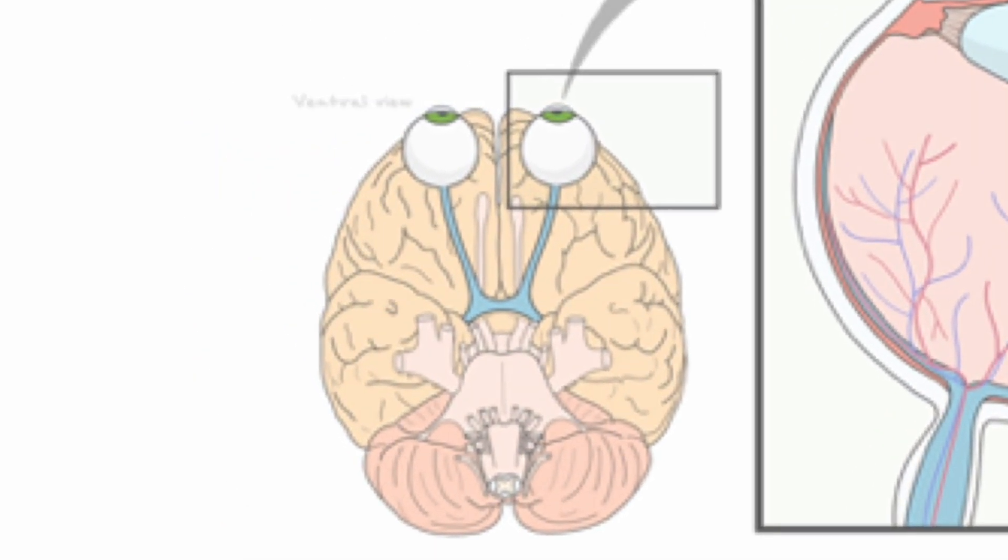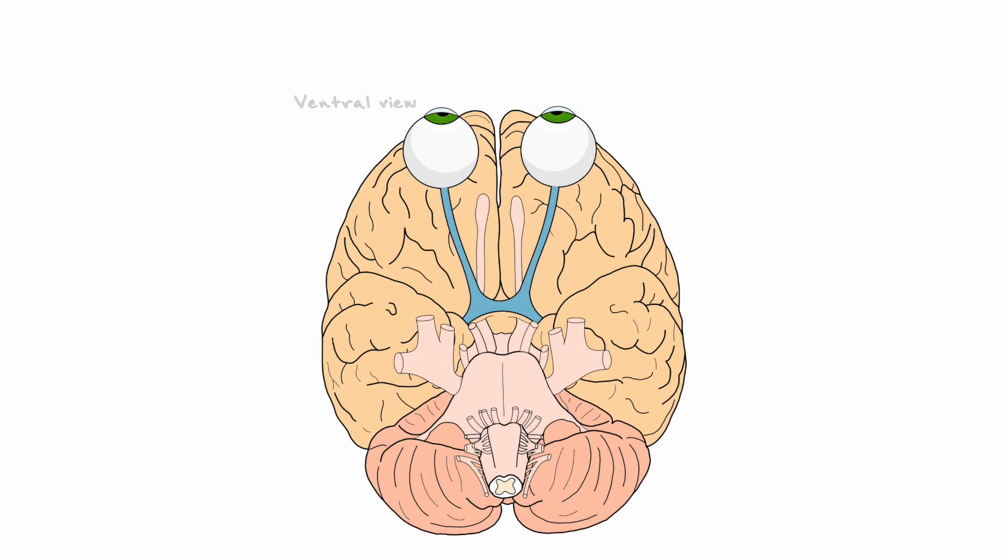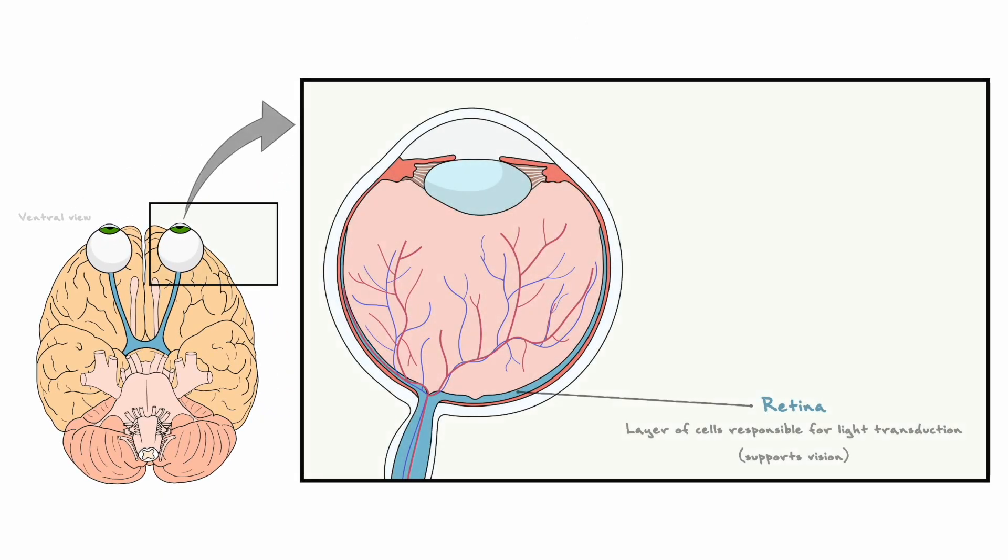To get situated, let's start by considering a ventral view of the brain and locate the eyes. Within the eye organ, we can find the retina, which is a cell layer at the back of the eye that is specialized in transducing incoming light information into neural signals to support our sense of vision.